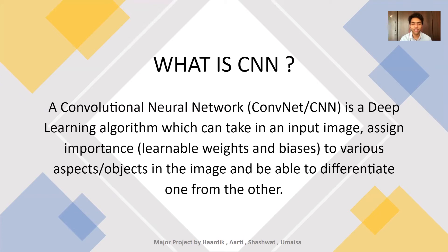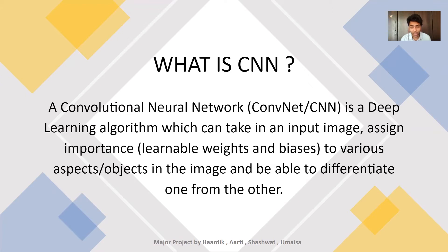Hey, Shashwat here. We just saw what YOLO is, but we heard about CNN. So let's see what a CNN is and how it works. A convolutional neural network, which we also call ConvNet or CNN, is a deep learning algorithm, also known as a space invariant algorithm. It is called space invariant because of its shared weight architecture, which can take in an input image, assign probability values to various parts of the image, and be able to differentiate one from another. Let's see the basic working of YOLO CNN.